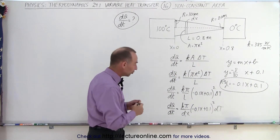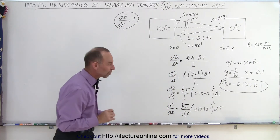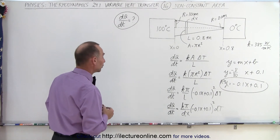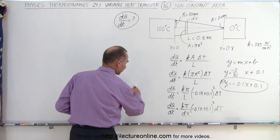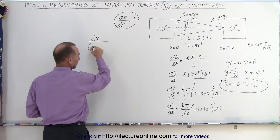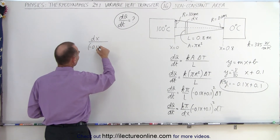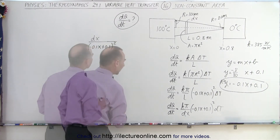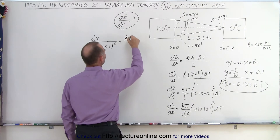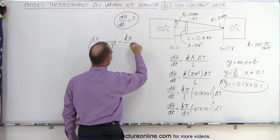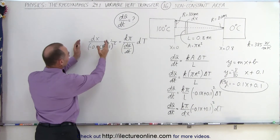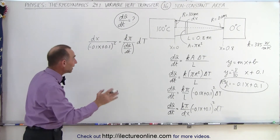Now we have two differential quantities, dx and dT, and we're ready to set up a differential equation by separating the two variables and integrating both sides. We write dx divided by the quantity (−0.1x + 0.1)² on the left side, and on the right side we have K·π divided by dQ/dt times dT, with x on one side and temperature on the other.